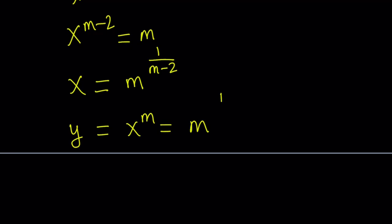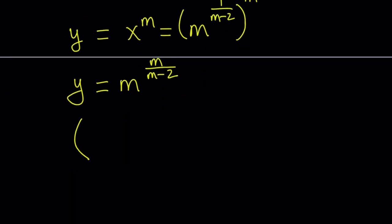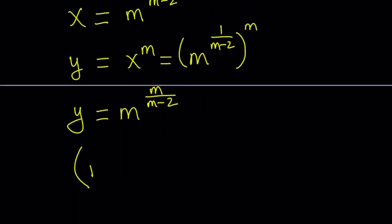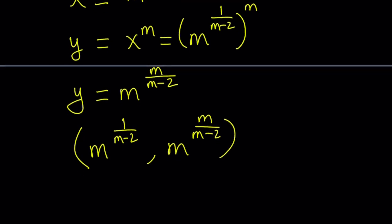This gives y equals m to the power one over m minus two, all raised to the power m. Since the exponents are multiplied, this simplifies to y equals m to the power m over m minus two. So we can write our solutions as an ordered pair: m to the power one over m minus two, comma, m to the power m over m minus two — where the first number is x and the second is y. Since m is a parameter, you can replace it with many different values, except m cannot equal two.